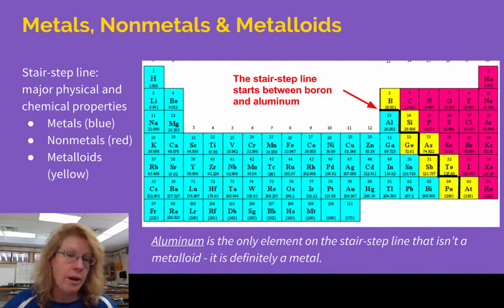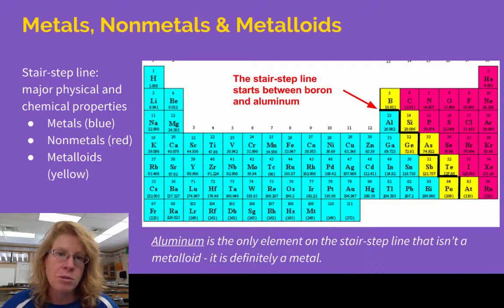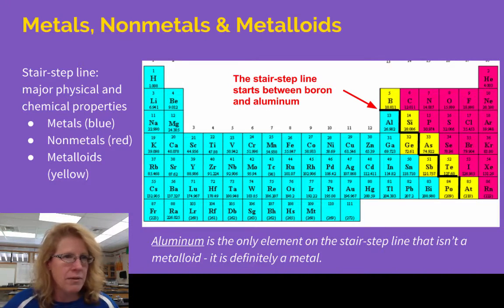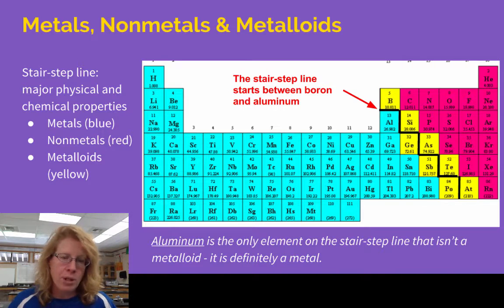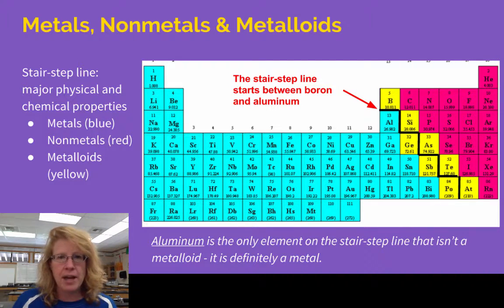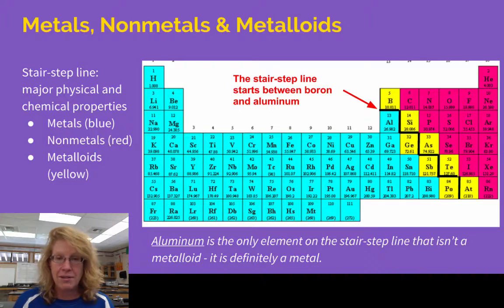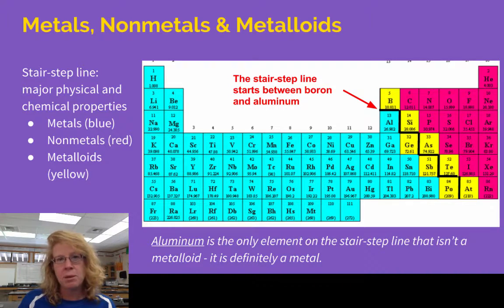You should be able to draw this on a periodic table. A lot of the ones in my classroom have this already drawn in for you, but not all of them do, so you want to make sure you know where it is. The importance of this stair-step line is that it's the big dividing line between two major halves of the periodic table — the metals and the non-metals.